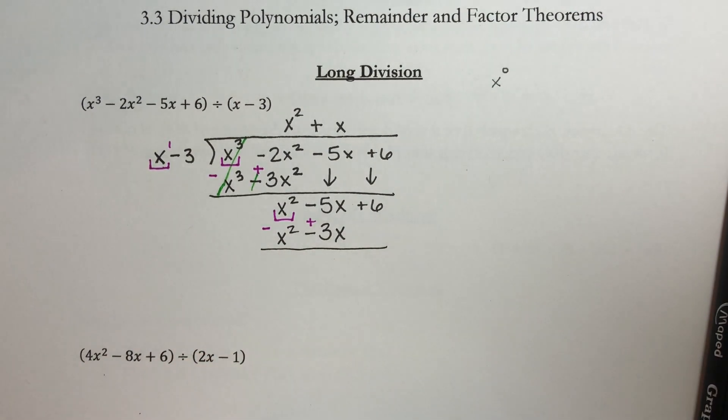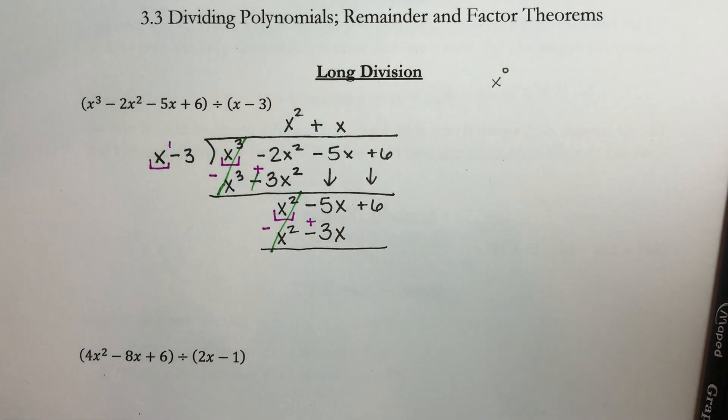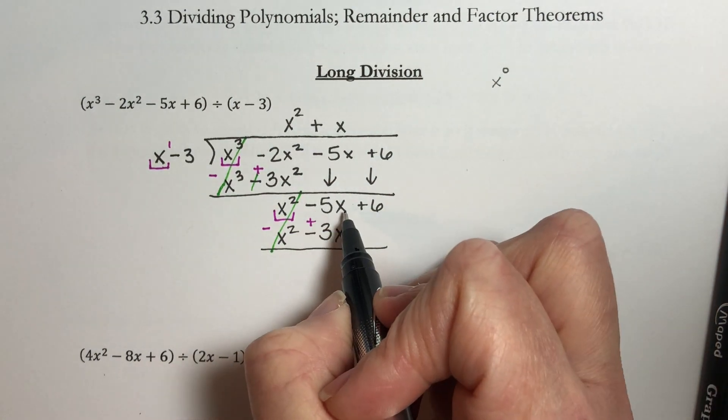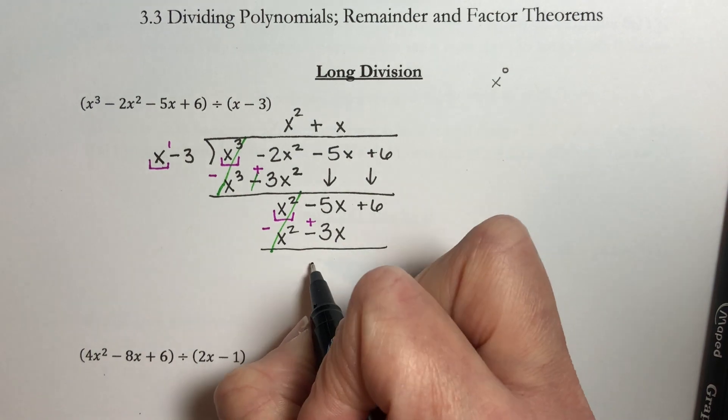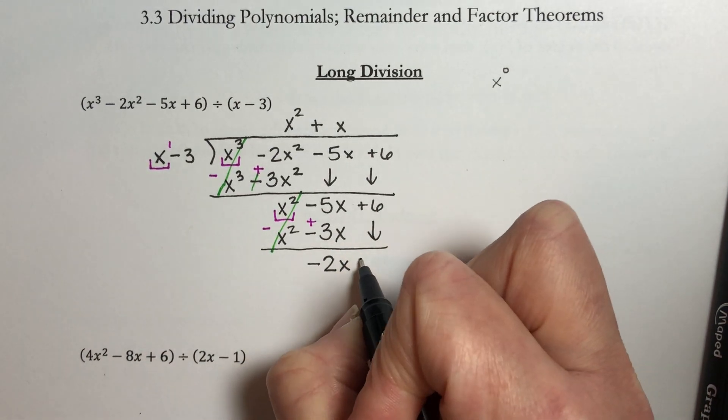So our first term should cancel out. I have negative 5x plus 3x, so that's a minus 2x, and now I'm going to bring down the plus 6.